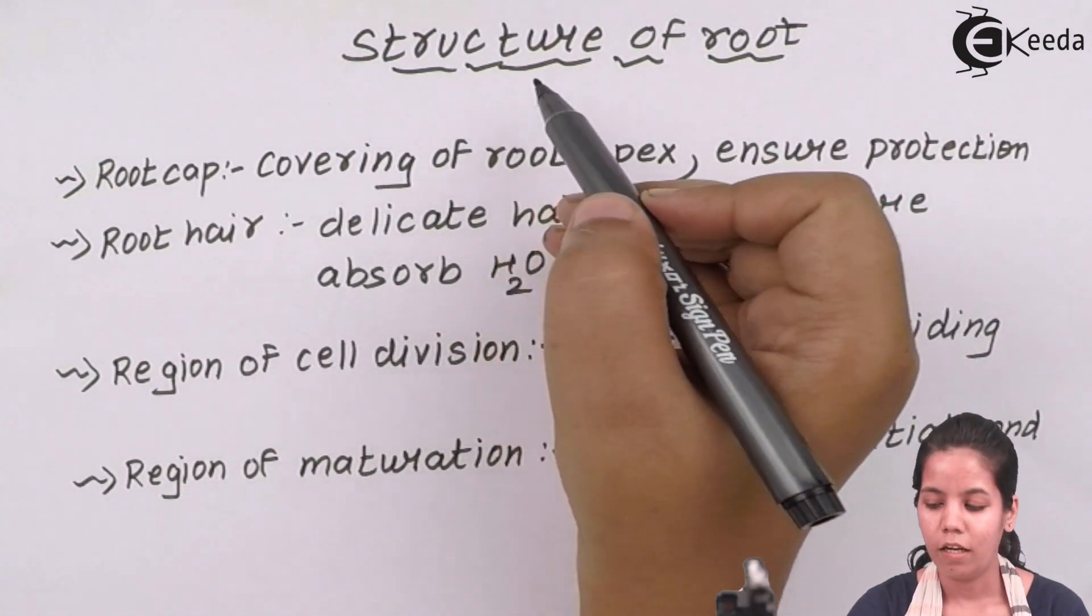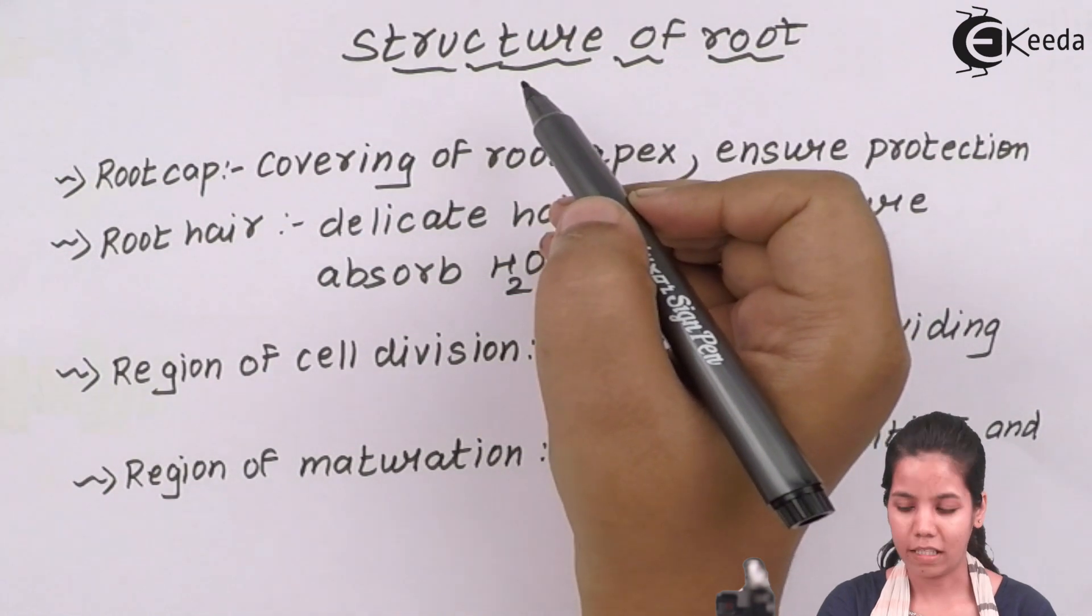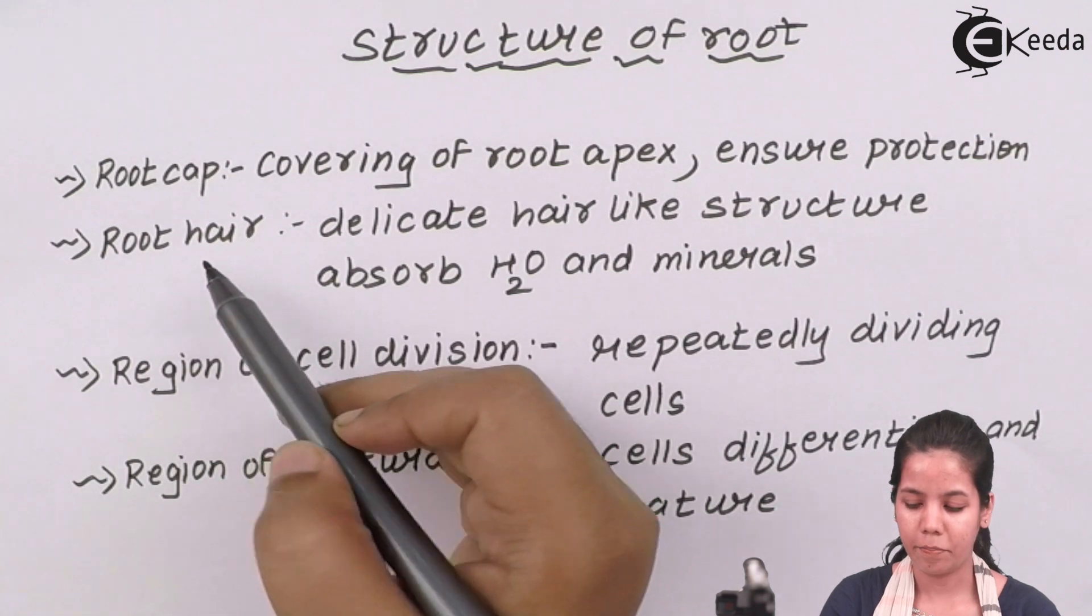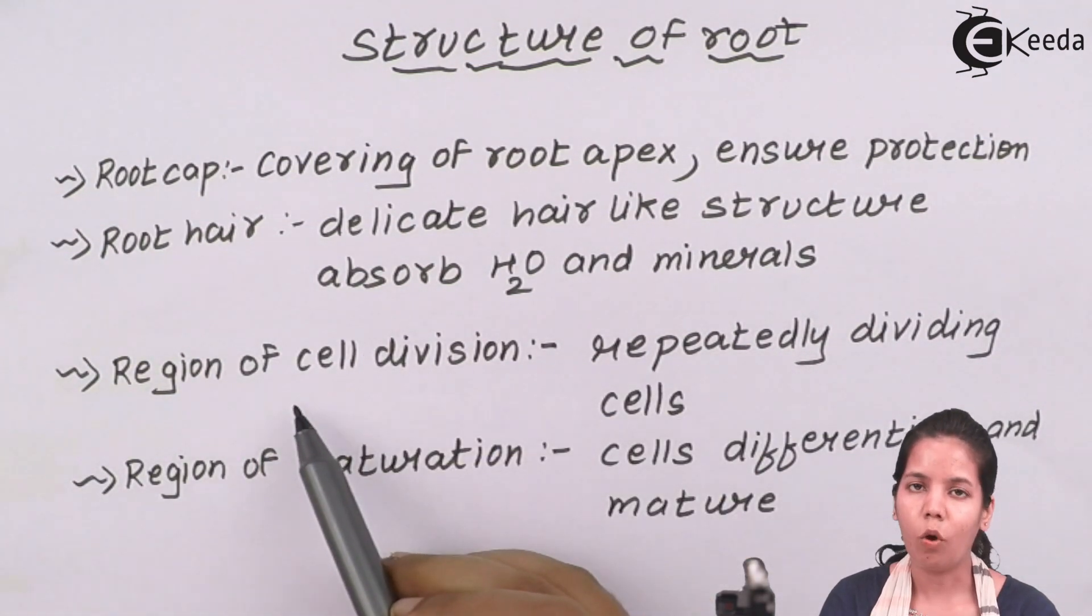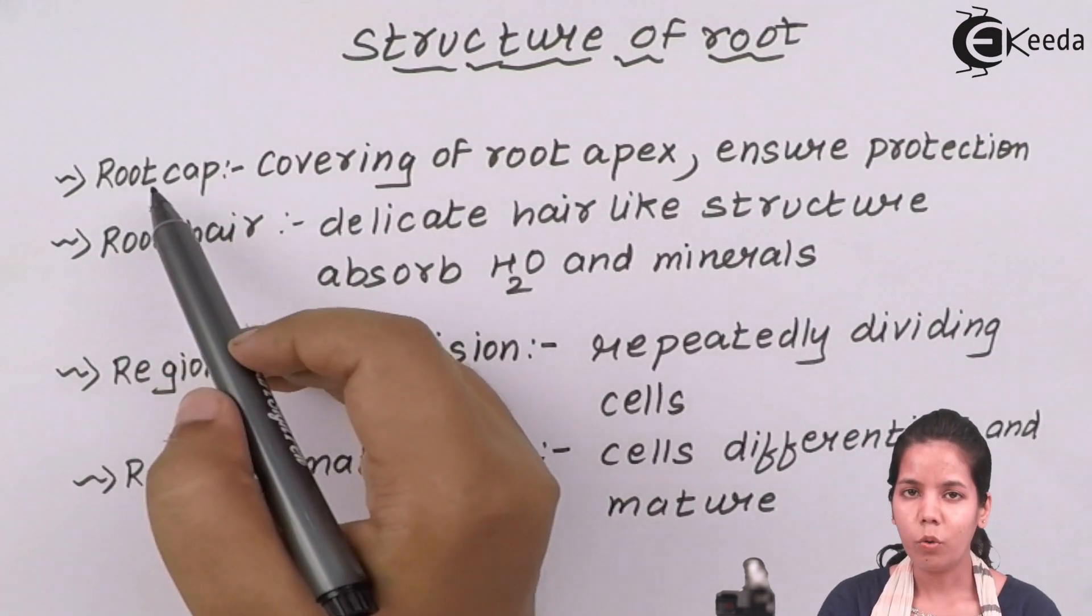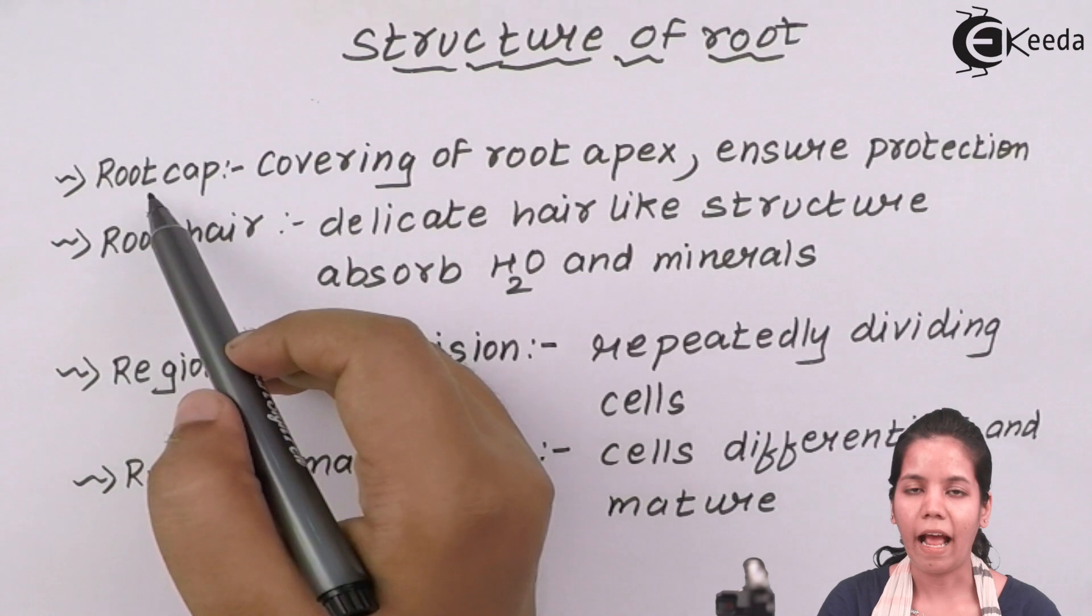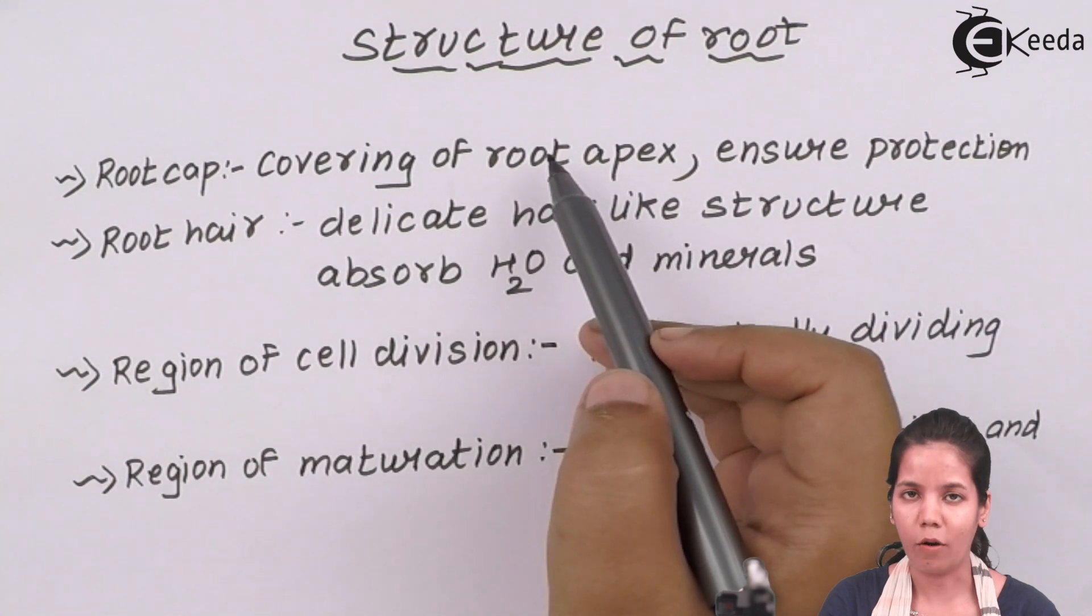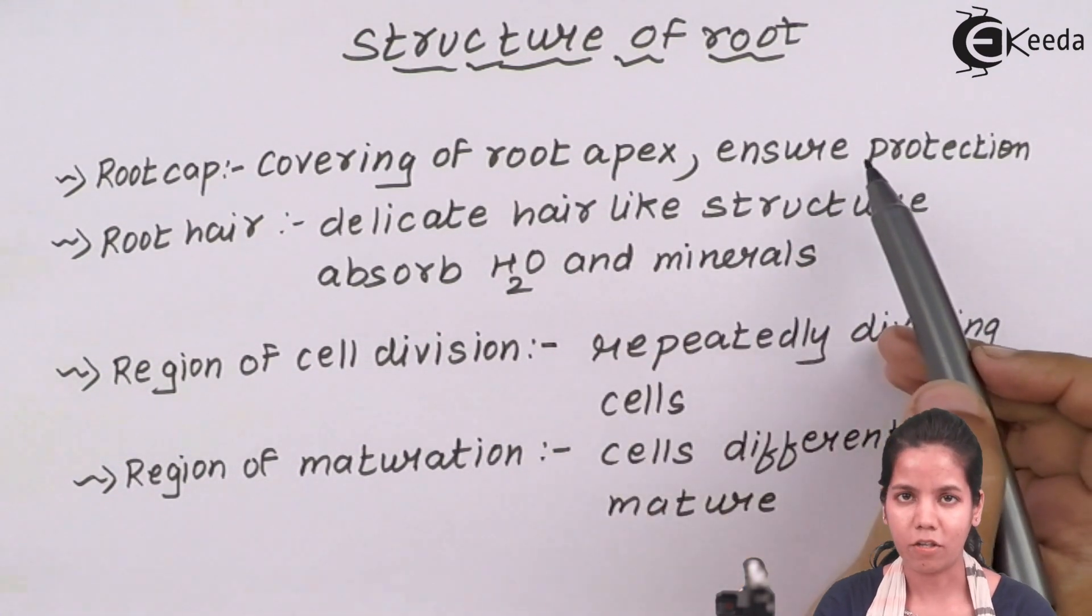Structure of a root, now the basic part which a root consists of are your root cap, root hairs, region of cell division or you can say region of meristematic activity, and region of maturation. Root cap is the region which is present at the basal part or the downward part of a root. It is the covering of the root apex and shows protection. Basically it acts as a cap to the root.